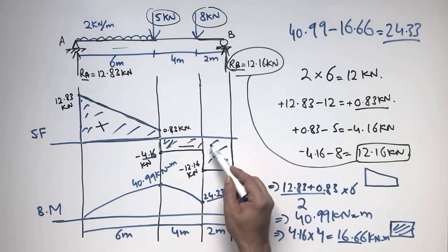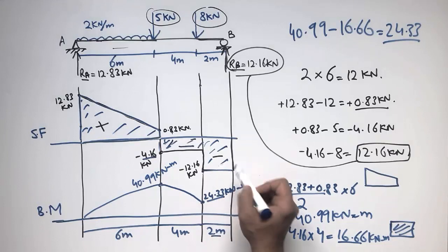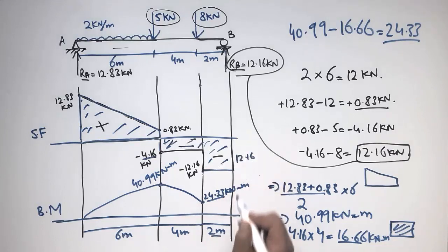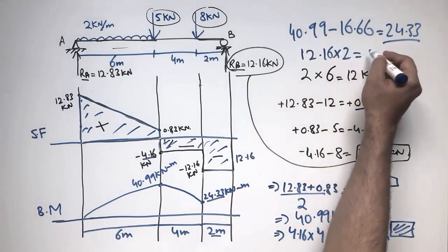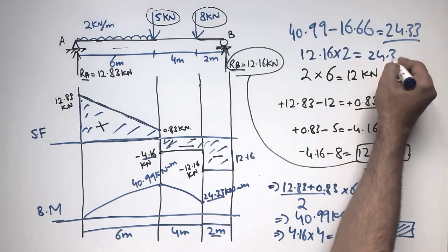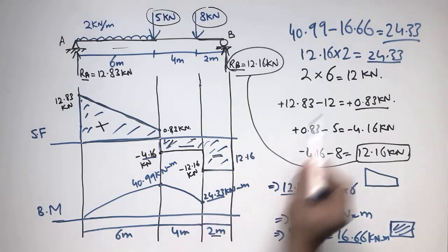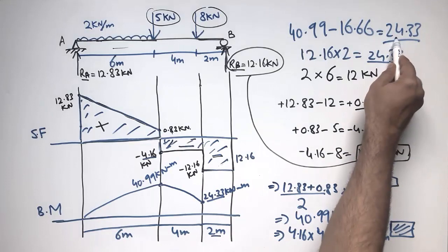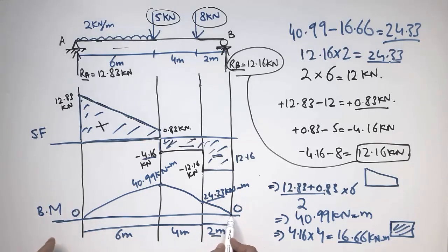For the final zone (10 m to 12 m), it is a rectangle with height 12.16 kN and length 2 meters. Area = 12.16 × 2 = 24.33 kN·m, acting in the negative direction. Subtracting: 24.33 − 24.33 = 0. The bending moment is zero at both supports, as expected for a simply supported beam.